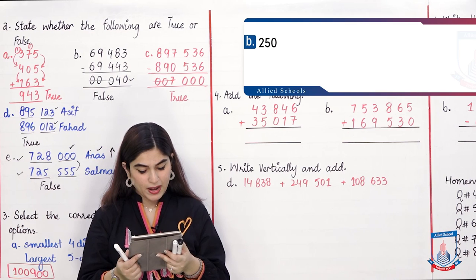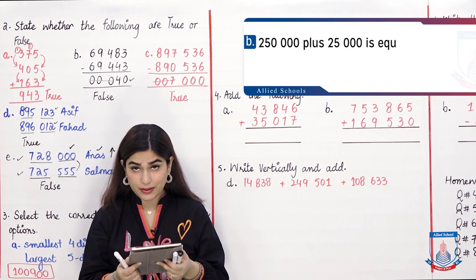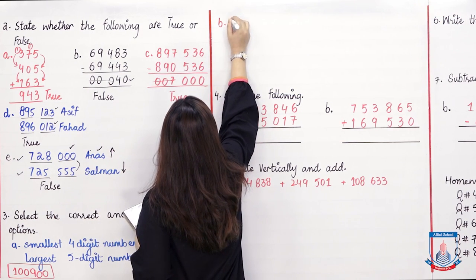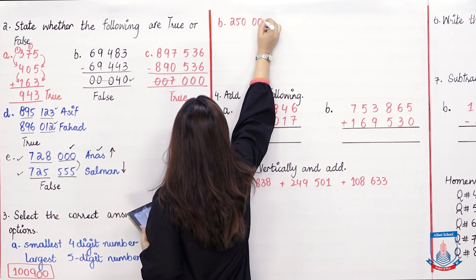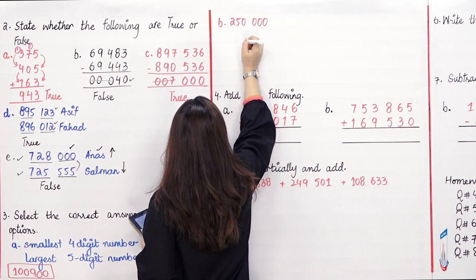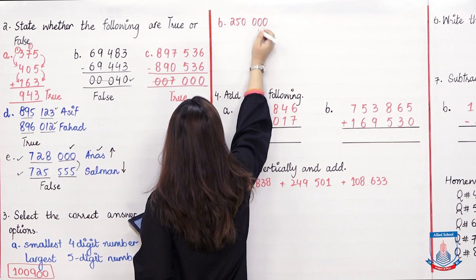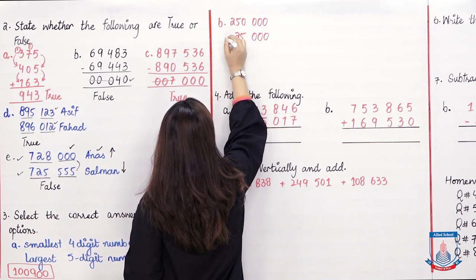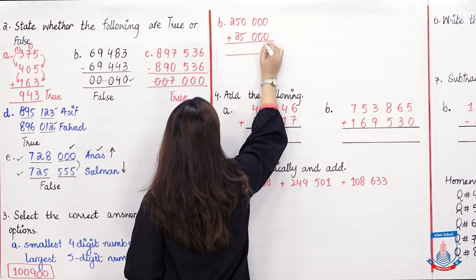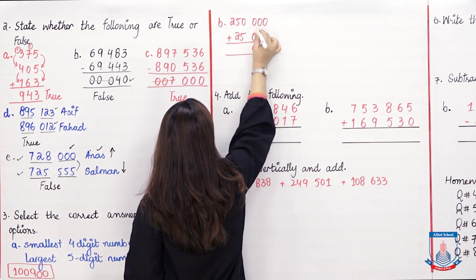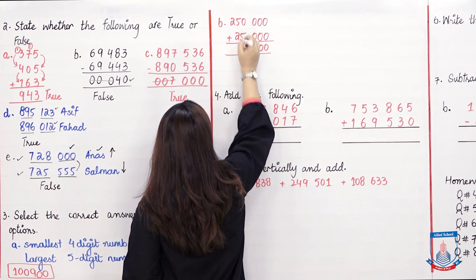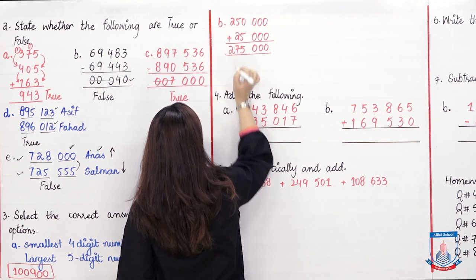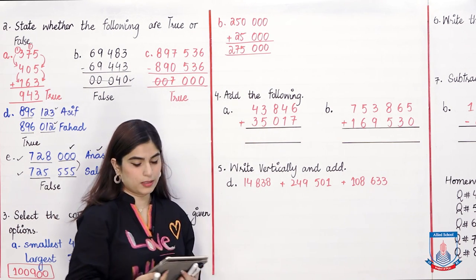Part B: 250,000 plus 25,000. Adding vertically: zeros in ones, tens, hundreds. Then 0 plus 5 is 5, 5 plus 2 is 7, and 2 stays the same. The answer is 275,000.